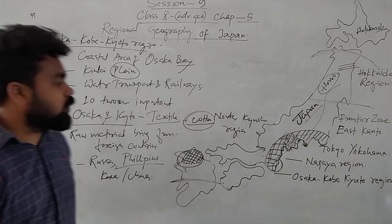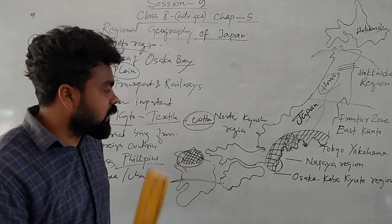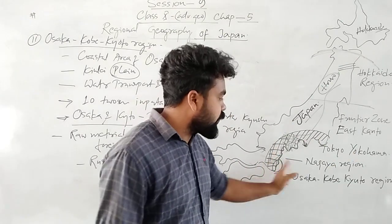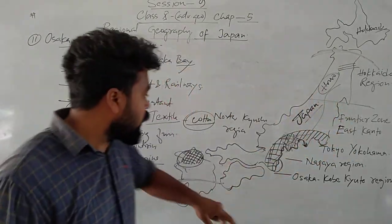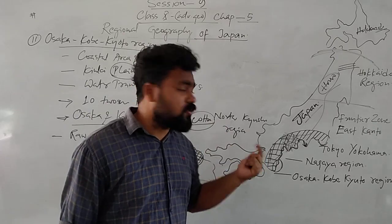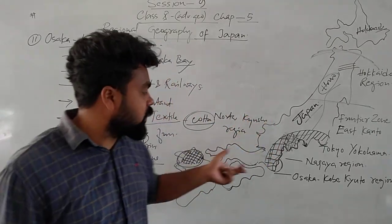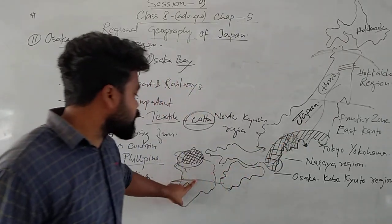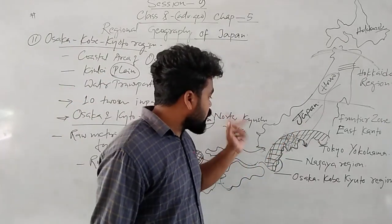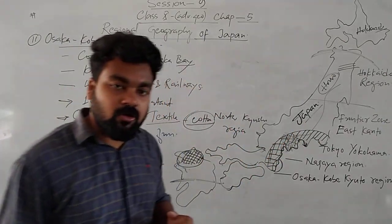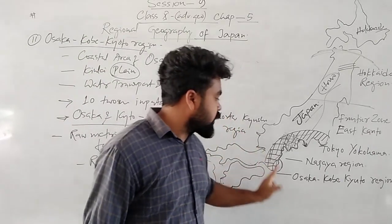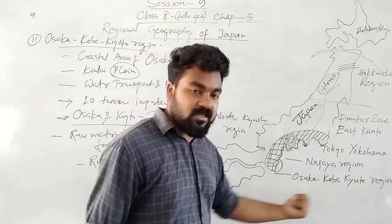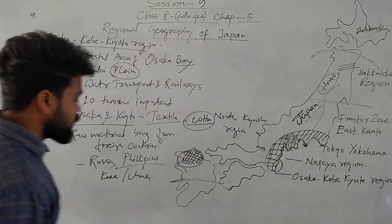In summary, these are the key points about the Osaka-Kyoto region. On the map, remember the locations of Osaka-Kyoto, Nagoya, Tokyo-Yokohama, and the North Kyushu region. North Kyushu is on the northern side of the Kyushu island. Japan's main islands are Hokkaido, Honshu, Shikoku, and Kyushu. All the industrial regions from Tokyo to Osaka Bay are situated along that coastal belt.